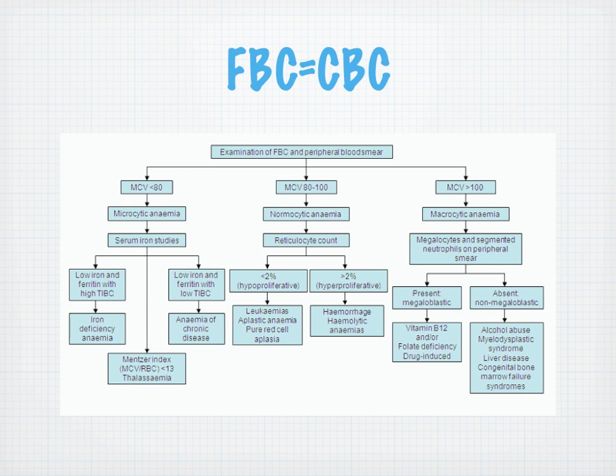This slide shows an algorithmic approach to examination of the full blood count. If the MCV is less than 80, we're thinking microcytic anemia. Low iron and ferritin with high TIBC suggests iron deficiency anemia; low iron and ferritin with low TIBC suggests anemia of chronic disease. If the MCV-to-RBC index — called the Mentzer index — points elsewhere, we're thinking thalassemia. This is an algorithmic approach to your different anemias. An MCV greater than 100 can lead you down to diagnoses like alcohol abuse and myelodysplastic syndromes.